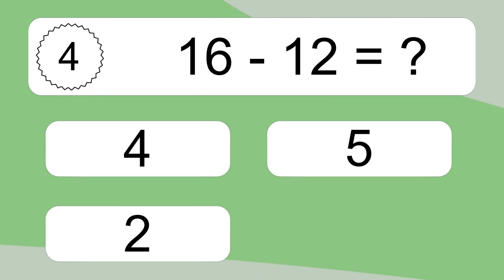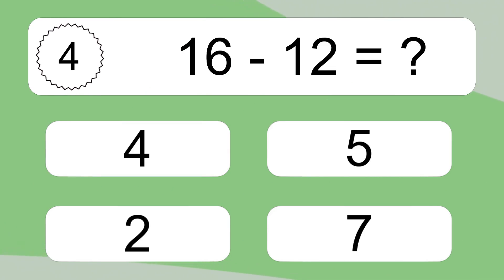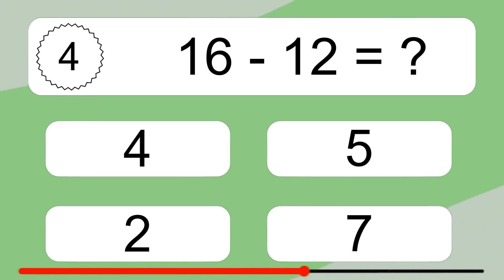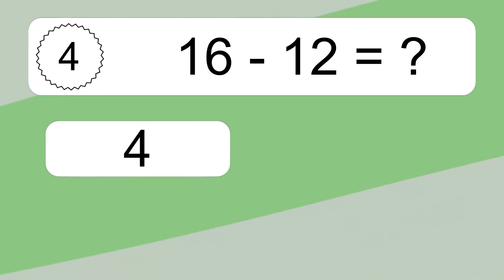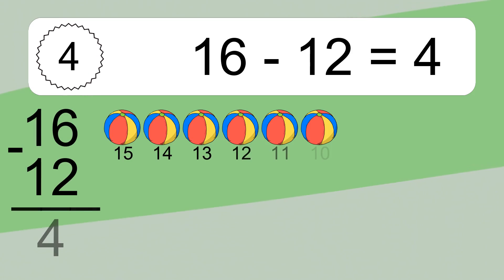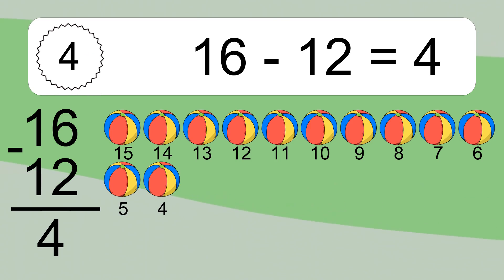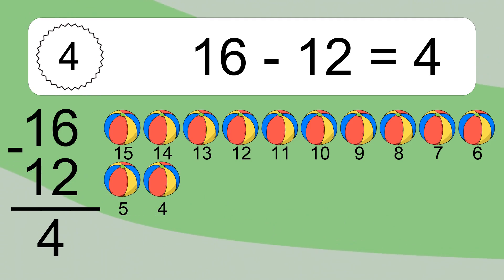16 minus 12 equals what? 16 minus 12 equals 4. Let's count it: 15, 14, 13, 12, 11, 10, 9, 8, 7, 6, 5, 4.